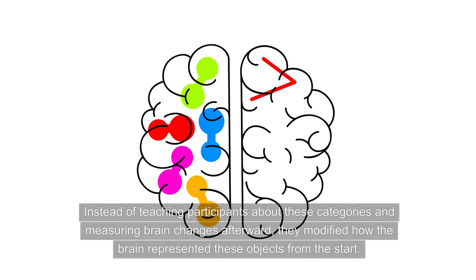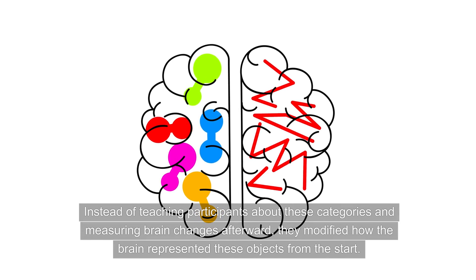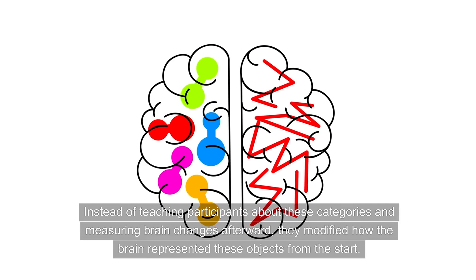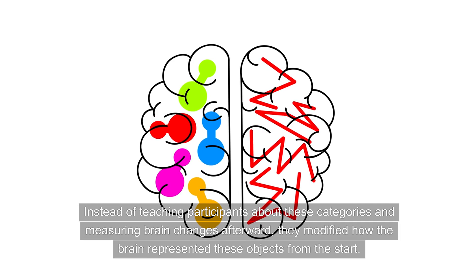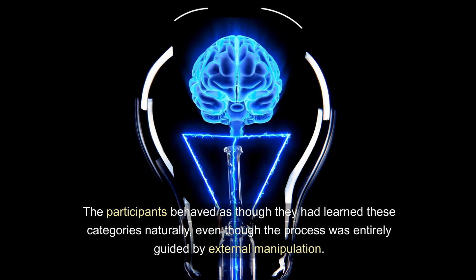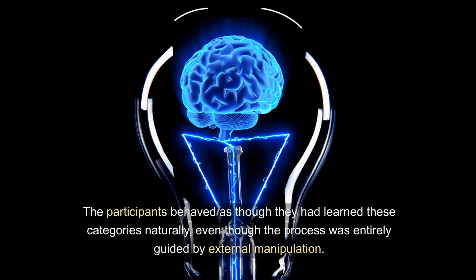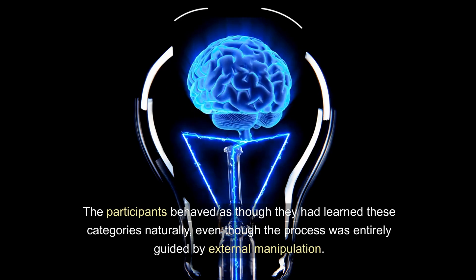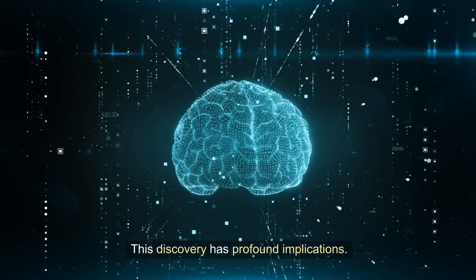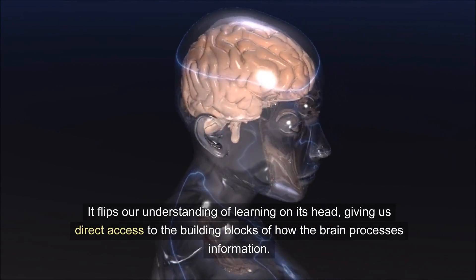Instead of teaching participants about these categories and measuring brain changes afterward, they modified how the brain represented these objects from the start. The participants behaved as though they had learned these categories naturally, even though the process was entirely guided by external manipulation. This discovery has profound implications.